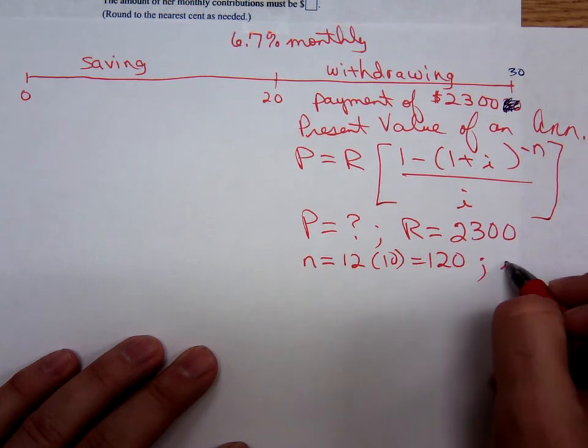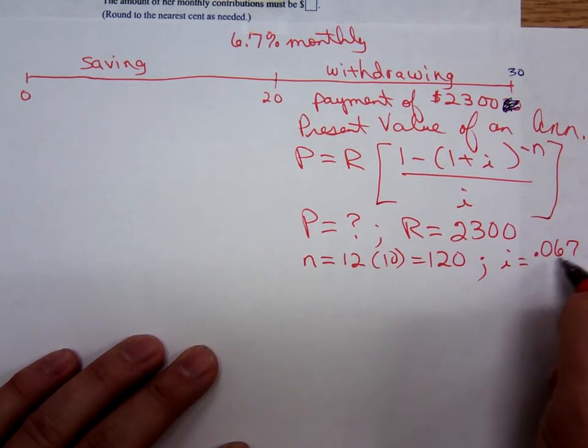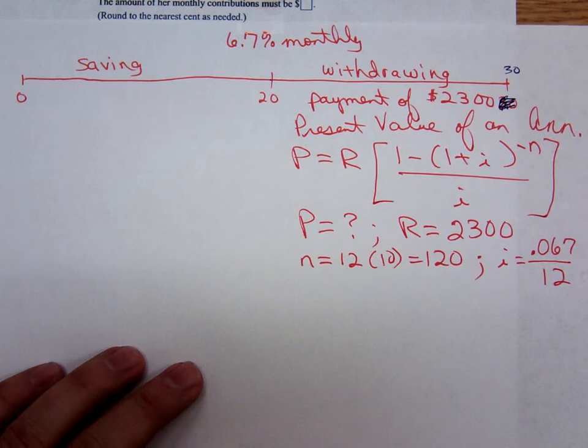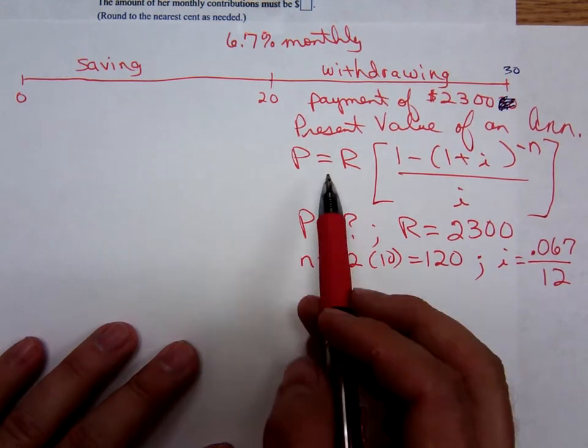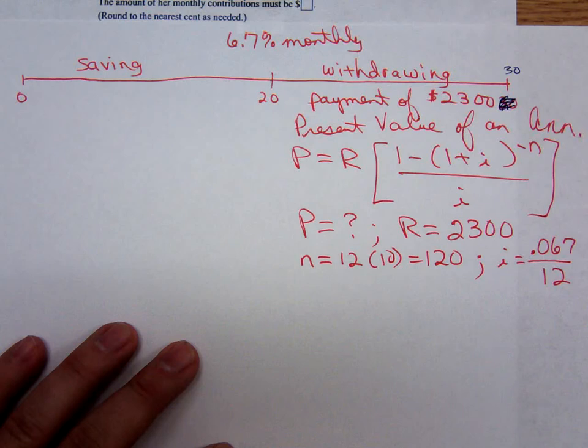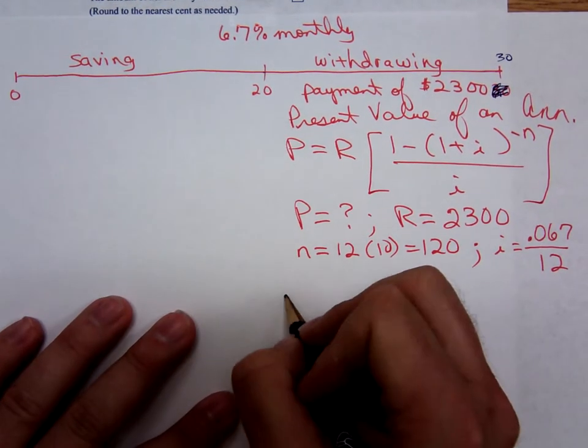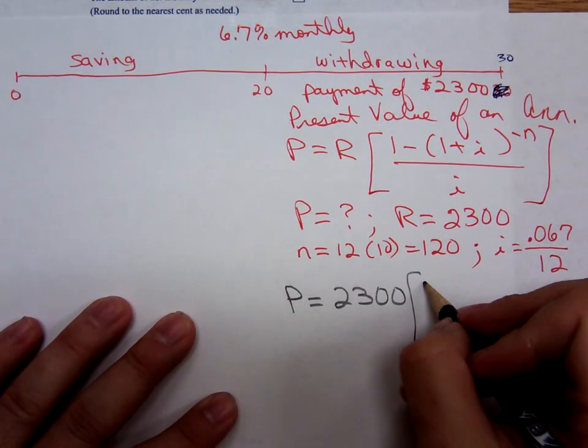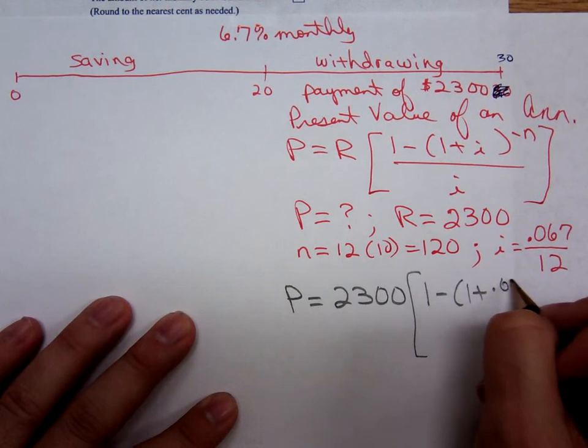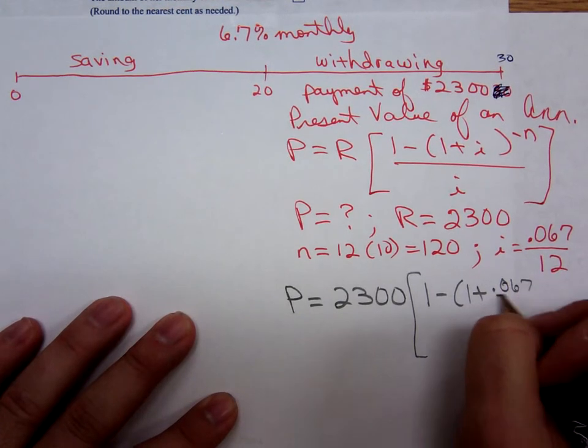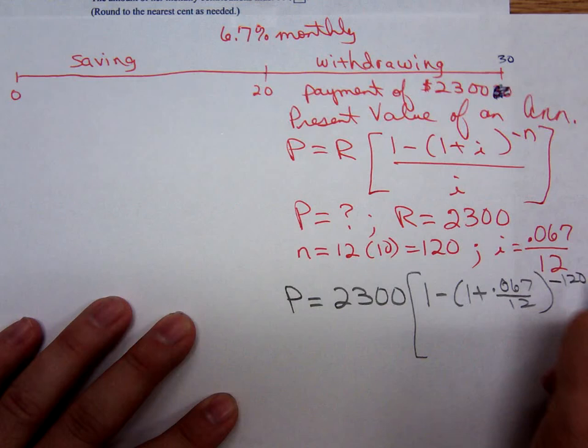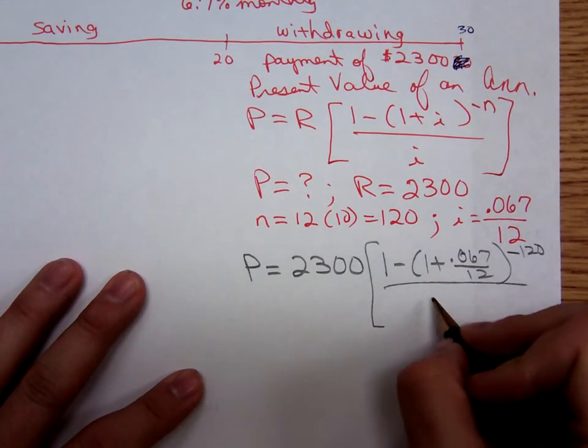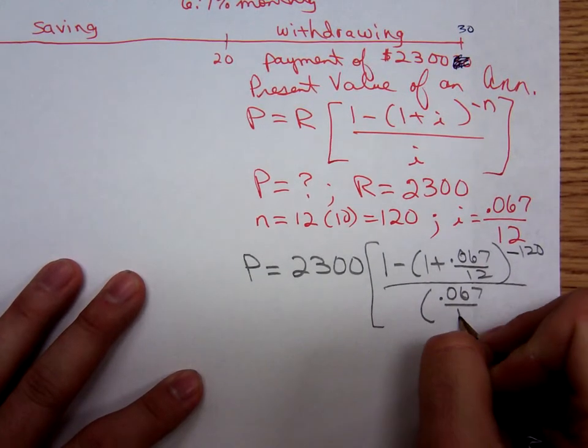And i, that's the .067. We have to split it up over 12 since the interest is compounded monthly. Plugging into the formula, here we have P equals 2300 times 1 minus 1 plus i to the negative 120, all over .067 over 12.